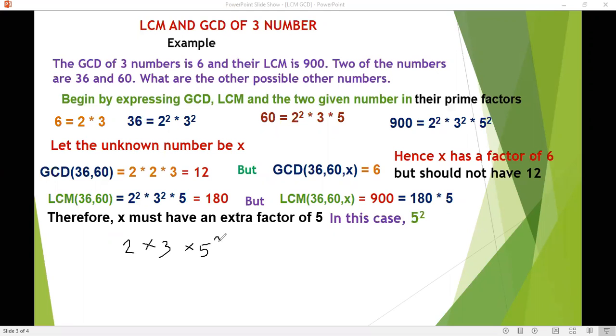So this would be the lowest number for x, which gives us 25 times 6, which gives us 150.